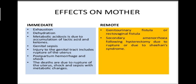Coming to the effects on the mother due to obstructed labour: first, exhaustion is due to constant agonizing pain and anxiety. Dehydration is due to increased muscular activity without adequate fluid intake. Metabolic acidosis is due to accumulation of lactic acid and ketones. Genital sepsis is an invariable accompaniment, especially after rupture of membranes with repeated vaginal examination or attempted manipulation. Injury to the genital tract includes rupture of the uterus, which may be spontaneous in multipara or traumatic following instrumental delivery, and postpartum haemorrhage.